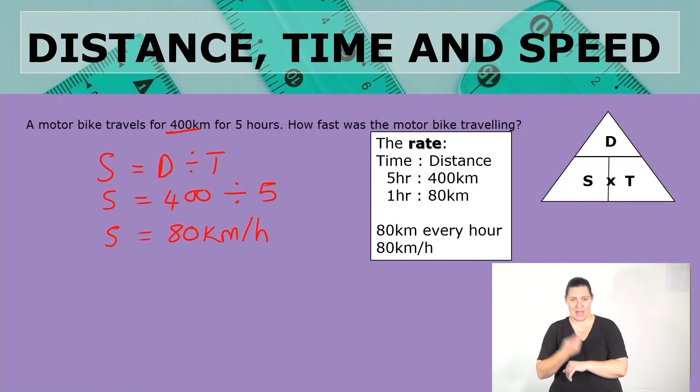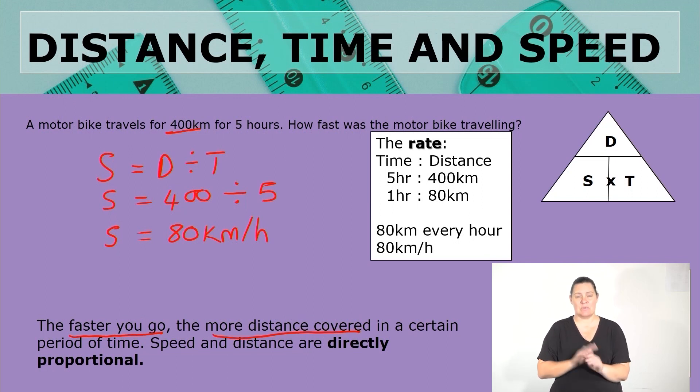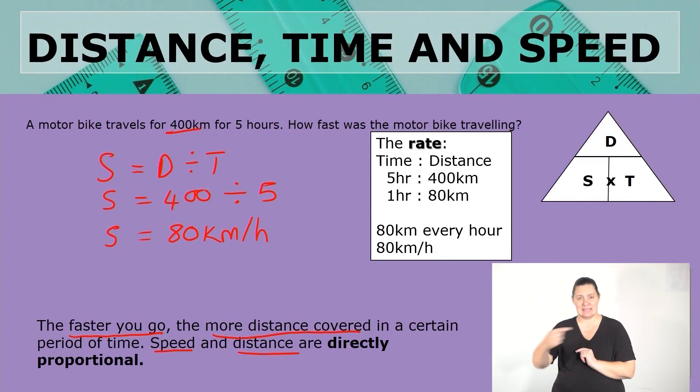Let's compare these two examples. In the previous example, we had the speed at 64 kilometers per hour and the distance was 320 kilometers. Now our speed has increased to 80 kilometers per hour and the distance is 400 kilometers. This means the faster you go, the more distance covered in a certain period of time. The time was five hours for both examples, but with the increase in distance, there is also an increase in speed. This means that speed and distance are directly proportional — when one quantity increases, the other quantity also increases.